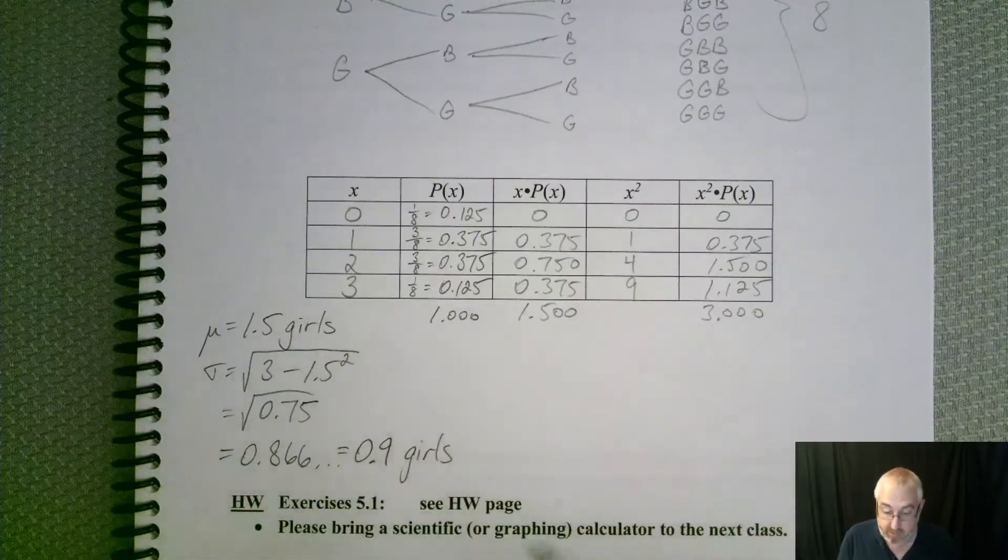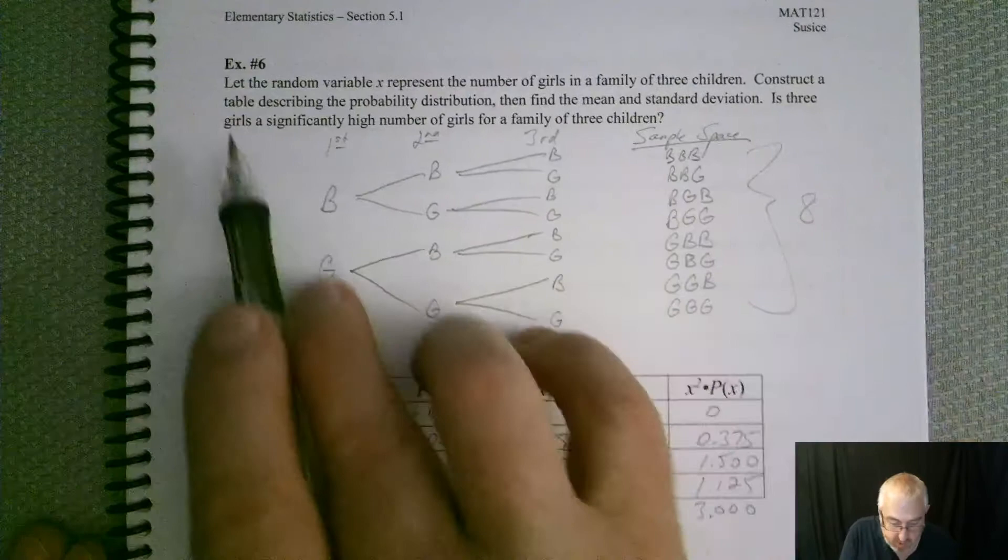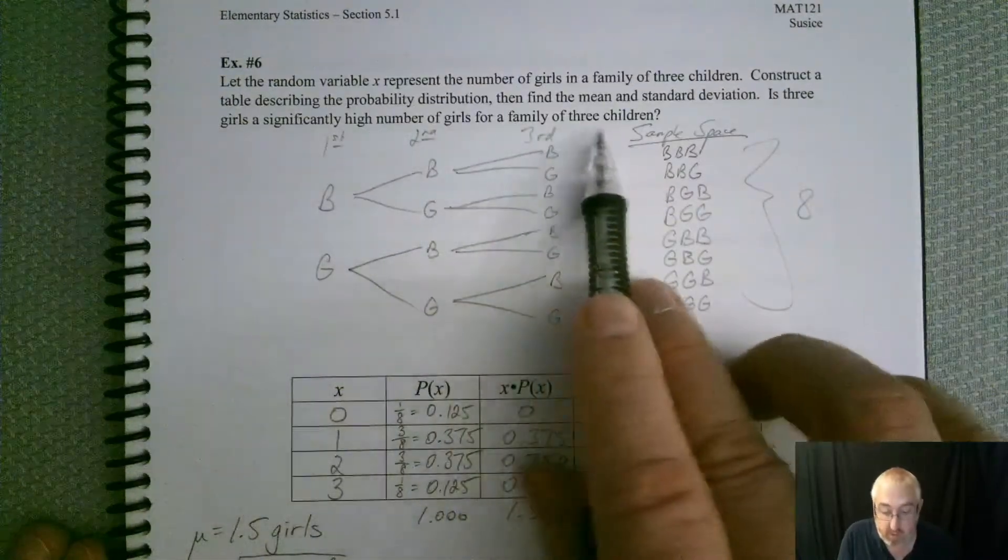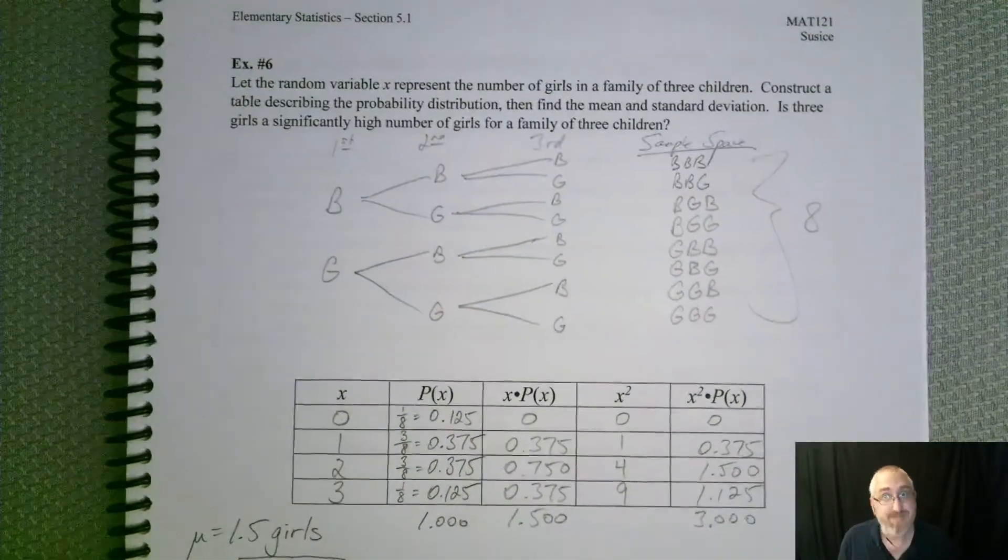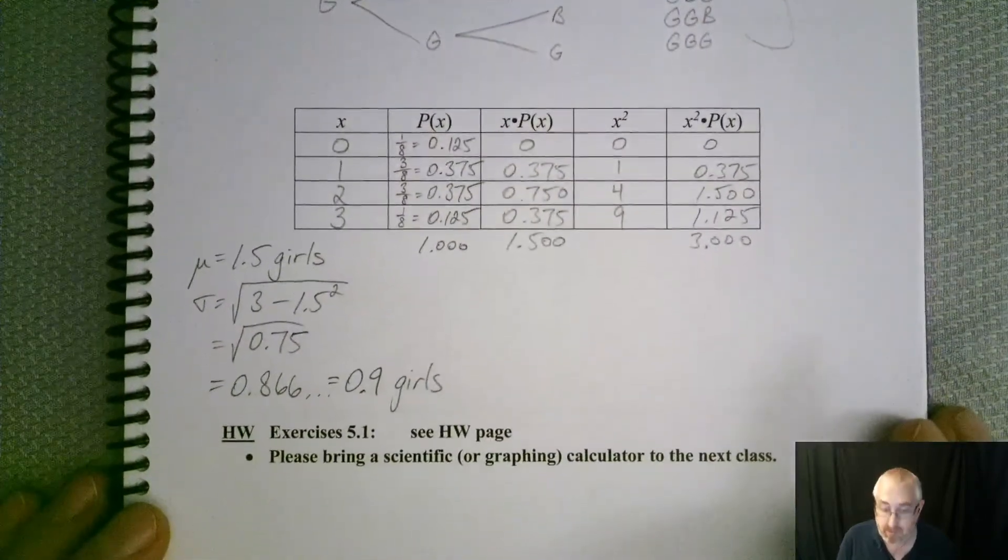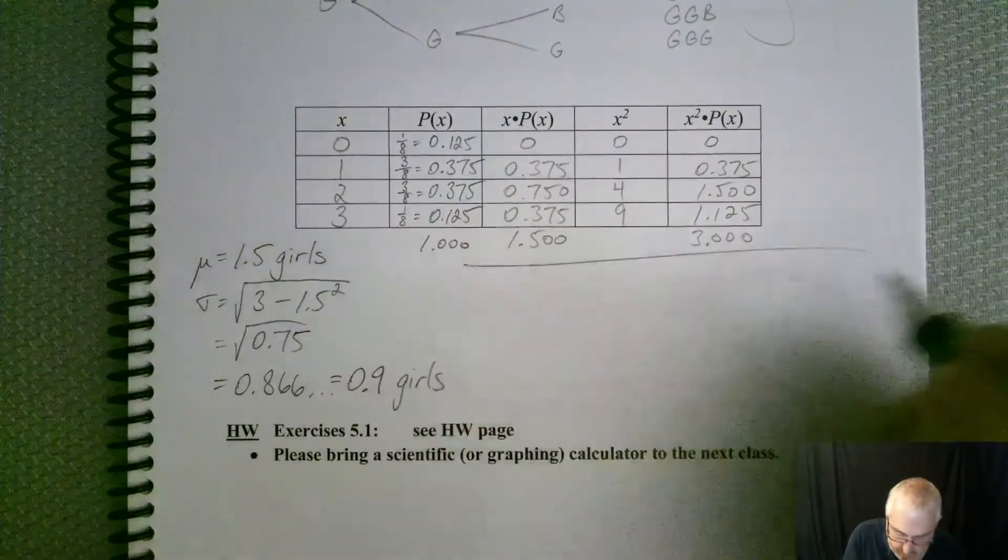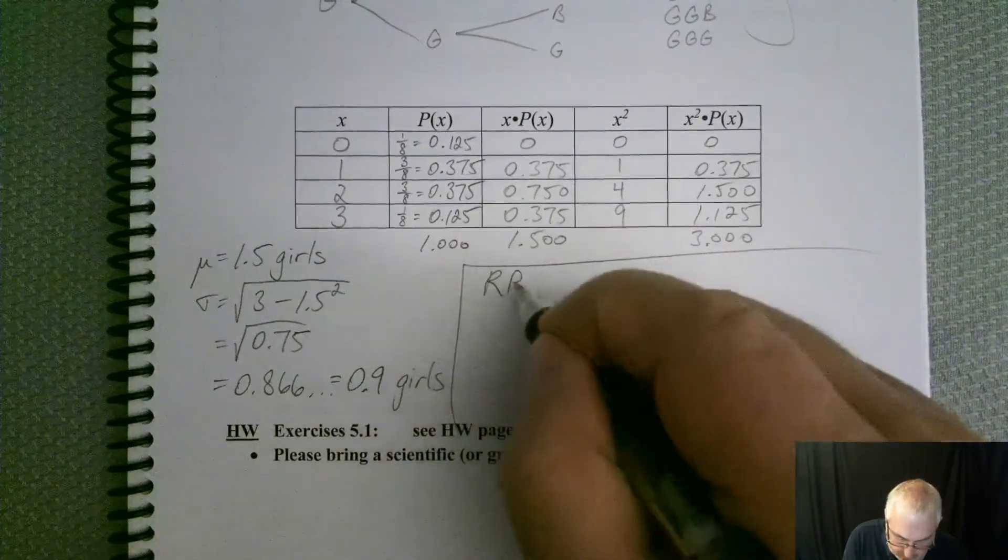So that would be fine. Okay, so we got our mean, we got our standard deviation, what else did they want? Is 3 girls a significantly high number of girls for a family of 3 children? Now this is the fun one because we can answer this two different ways. So let's do both of them.